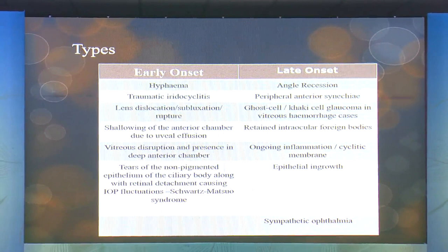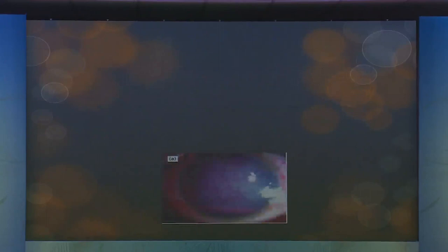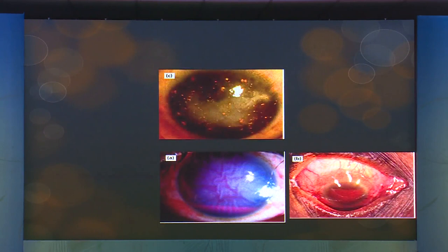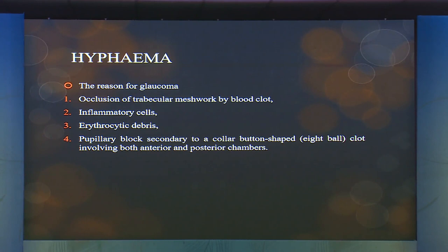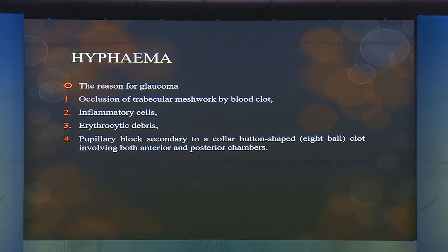Hyphema is the most common finding in blunt trauma and a key cause of traumatic glaucoma. It causes mechanical blockade of the trabecular meshwork by blood, inflammatory cells, erythrocytic debris, and pupillary block. The larger the volume of hyphema, the greater the risk of elevated intraocular pressure. Clinically, one must distinguish between dispersive hyphema (more translucent, settling blood), frank blood clots, and fresh bleeds.